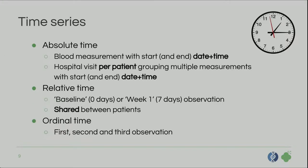I want to bring that back. For time series, you have quite different types: absolute time, where you have a real timestamp; relative time, as you might see in a clinical setting; and ordinal time, where you only know the order of events. Absolute time is modeled perfectly in I2B2 — you can have timestamps with observations and even group multiple observations into one visit. For example, I go to the hospital for the entire day; the visit has timestamps, and then you have multiple observations within there.